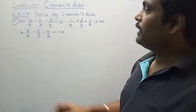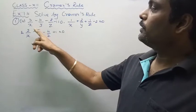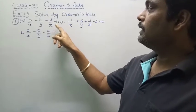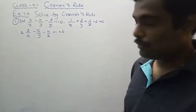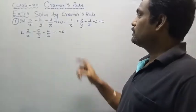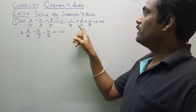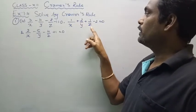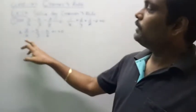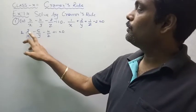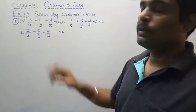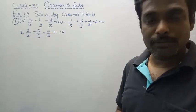We have 3/x minus 4/y minus 2/z minus 1 equal to 0. In the second equation, 1/x plus 2/y plus 1/z minus 2 equal to 0. The third equation: 2/x minus 5/y minus 4/z plus 1 equal to 0.